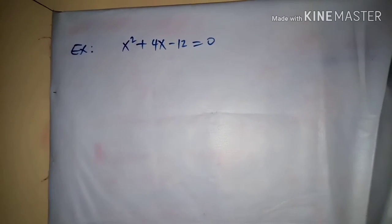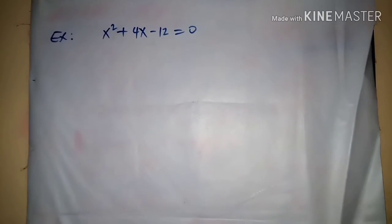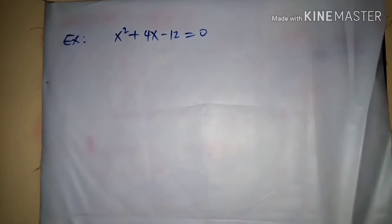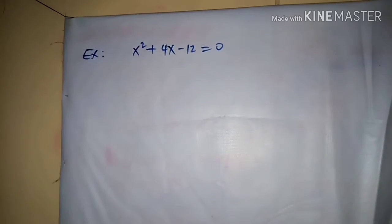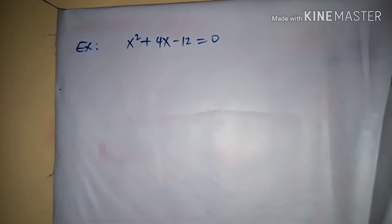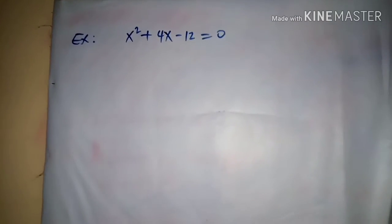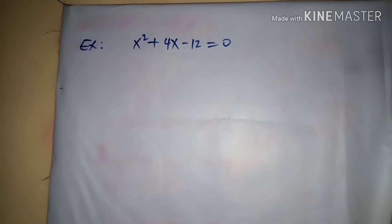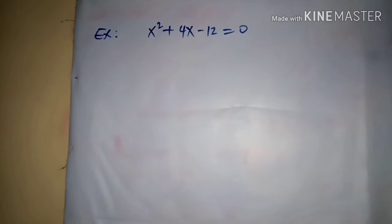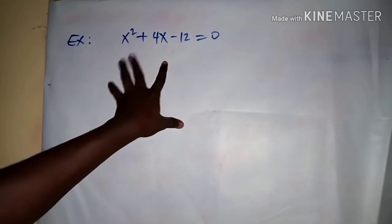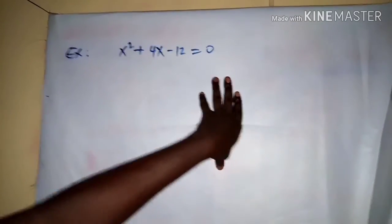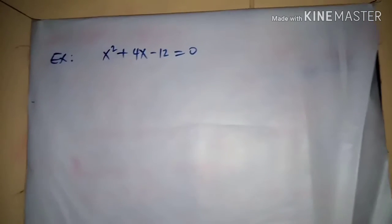In the last module I introduced the quadratic formula and derived it. I hope you were able to understand. For more exercises and tutorials, you can go to your textbook and try a few questions to acquaint yourself with the method. I have an example here: x² + 4x - 12 = 0. We will solve this using the quadratic formula.